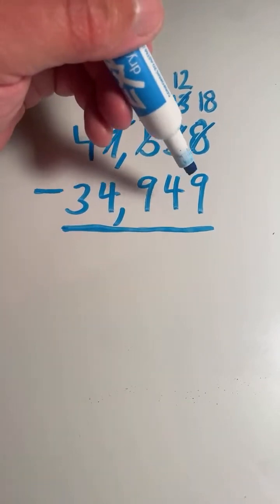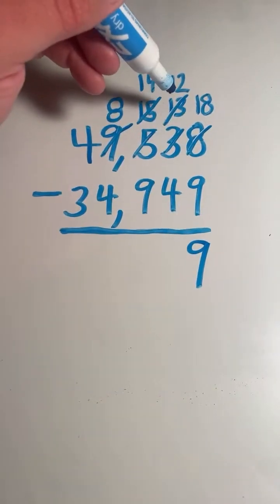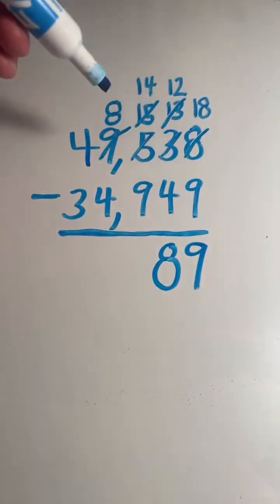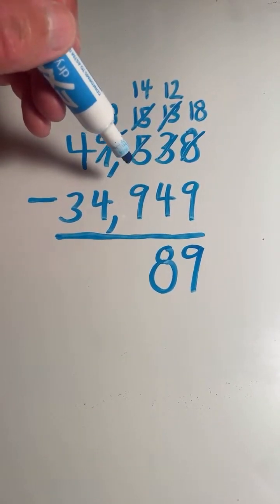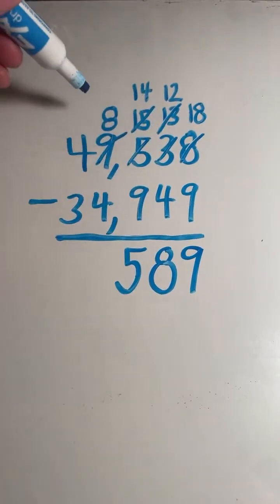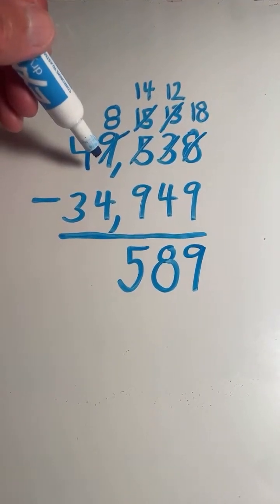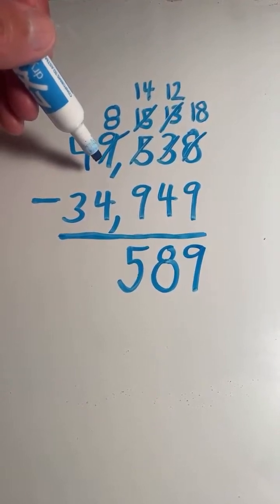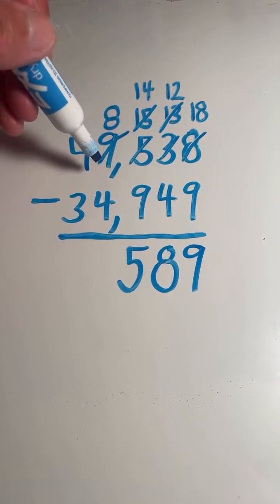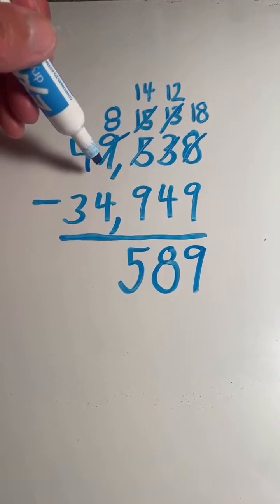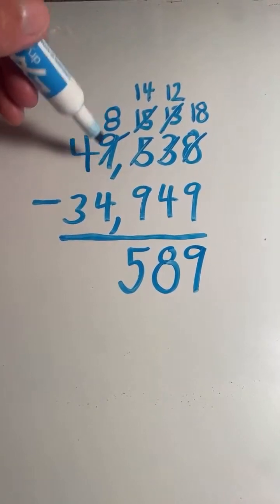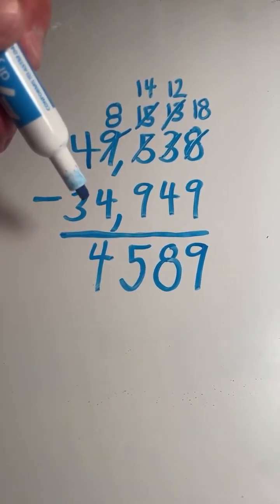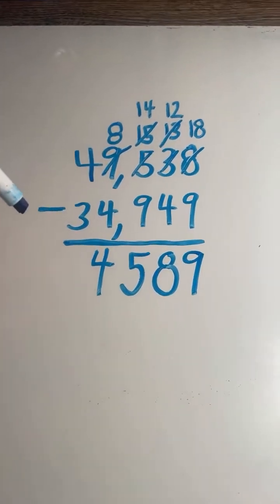So 18 minus 9. 18 minus 9 equals 9. 12 minus 4 equals 8. 14 minus 9 equals 5. 8 minus 4 equals 4. And 4 minus 3 equals 1.